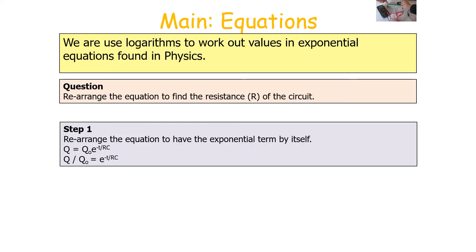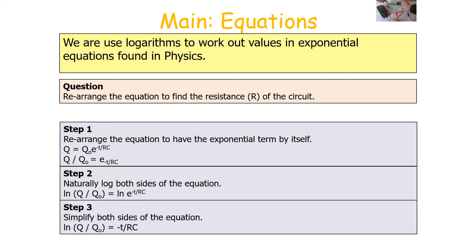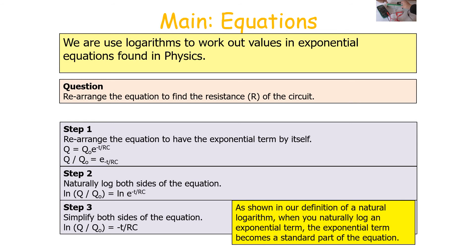Step one: rearrange the equation to have the exponential term by itself, giving Q/Q₀ = e^(−T/RC). Then take the natural log of both sides, giving LN(Q/Q₀) = LN(e^(−T/RC)). We can simplify the right-hand side because LN of an exponential removes the e and leaves just the power, so LN(Q/Q₀) = −T/RC. Finally, rearrange to make R the subject of the equation.